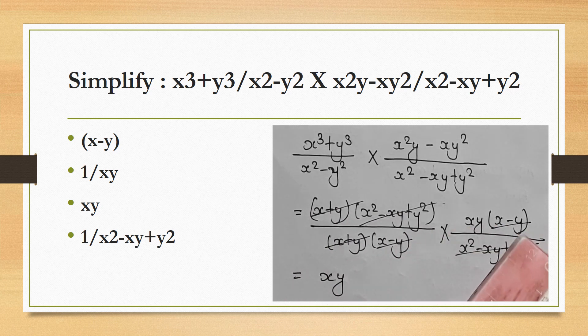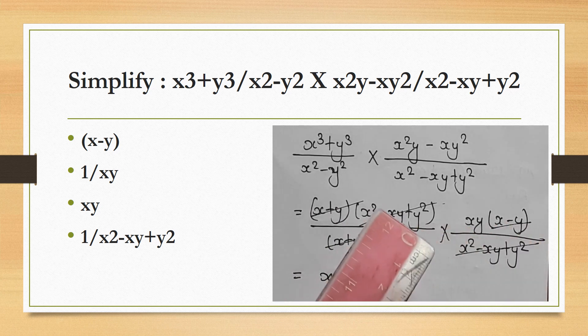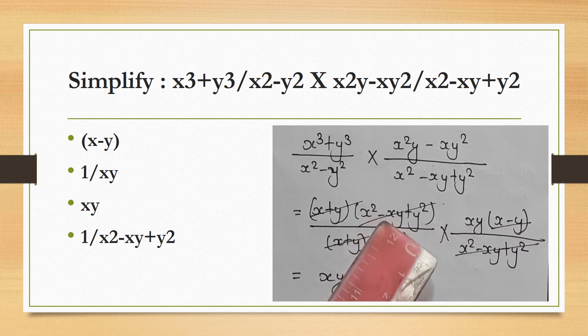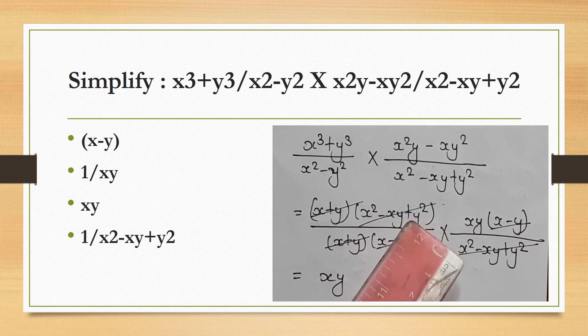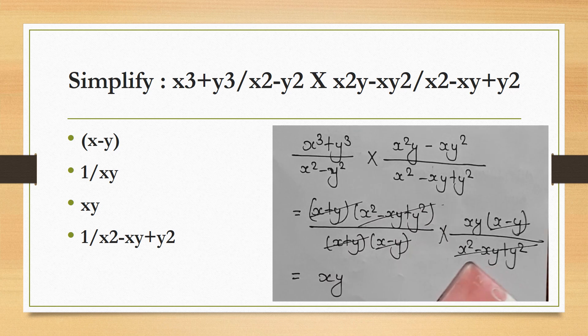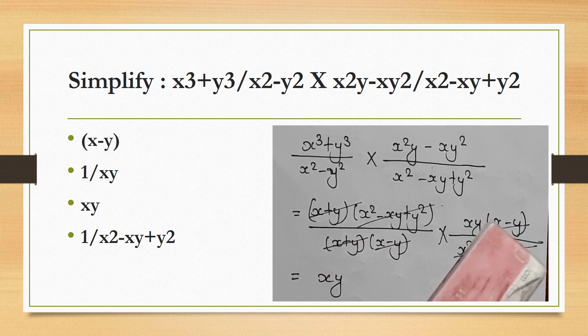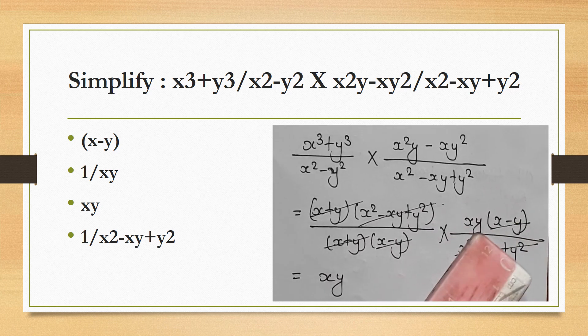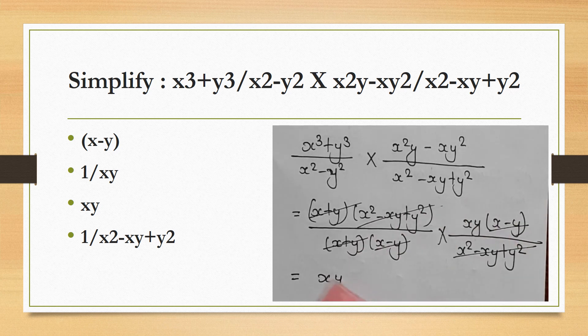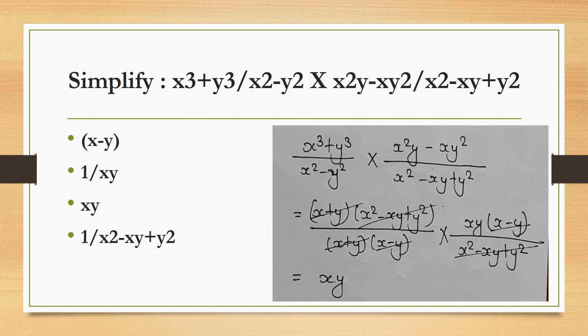After factoring and cancelling, x² − xy + y² cancels out, and the rest simplifies. The correct answer is xy.